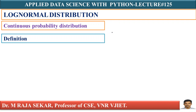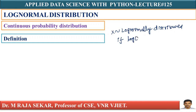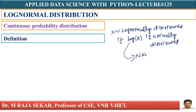A random variable is log normally distributed if its logarithm is normally distributed. A random variable X is log normally distributed if log of X is normally distributed. Here, the log is the natural log — ln.